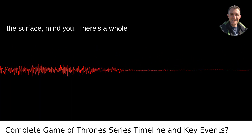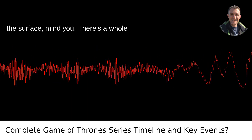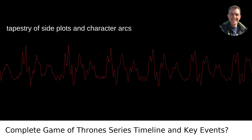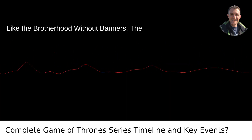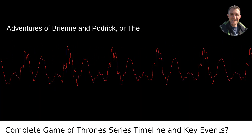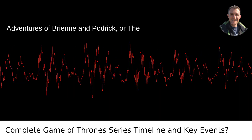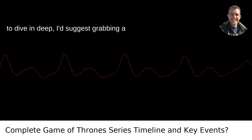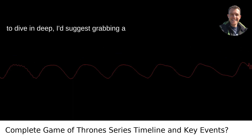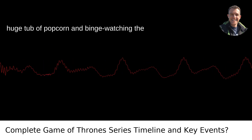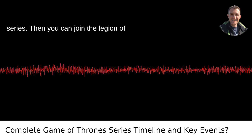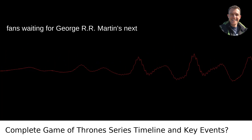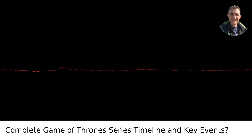This is just skimming the surface, mind you. There's a whole tapestry of side plots and character arcs left out for the sake of brevity — like The Brotherhood Without Banners, the adventures of Brienne and Podrick, or the escapades of the Hound. If you really want to dive in deep, I'd suggest grabbing a huge tub of popcorn and binge-watching the series. Then you can join the legion of fans waiting for George R.R. Martin's next book and complain about the ending.